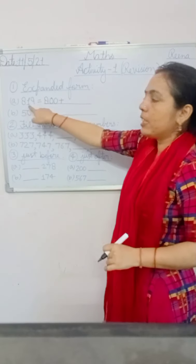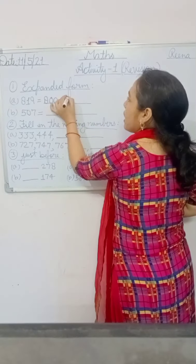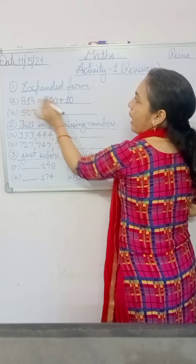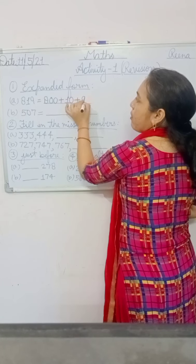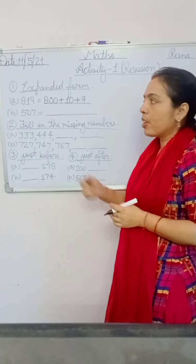Plus, one is in tens place, so write ten. And nine is in ones place, so write nine. So the expanded form is: 800 + 10 + 9.